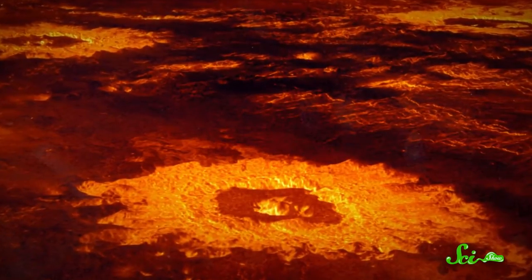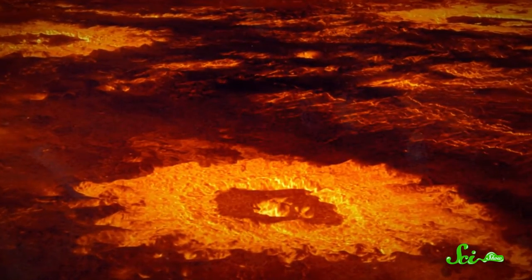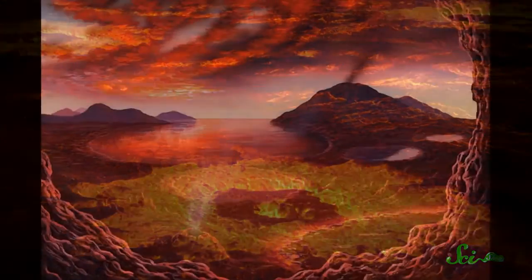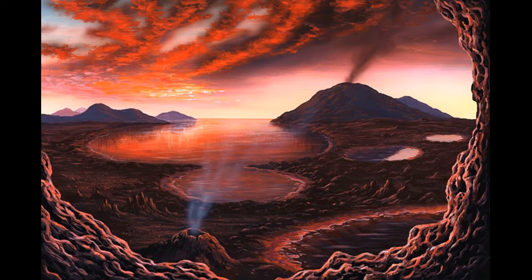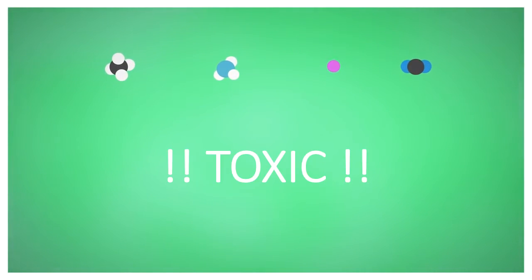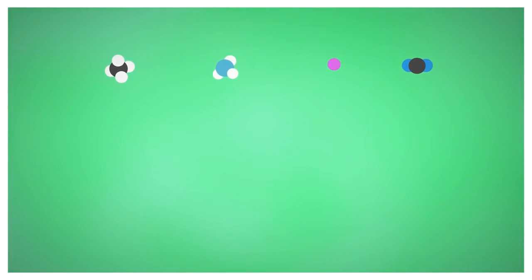If you were able to travel back to visit the Earth during the Archean, you would likely not recognize it and think you're on Venus. The atmosphere was very different from what we breathe today — it was likely composed of methane, ammonia, hydrogen, and carbon dioxide, which would be toxic to most life on our planet today.